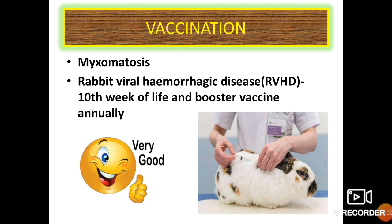Vaccination is very important to prevent the two deadly viral diseases in rabbits. The first one is myxomatosis and the second one is rabbit viral hemorrhagic disease. Vaccination can be done at 10 weeks of life, and booster vaccination is needed annually.